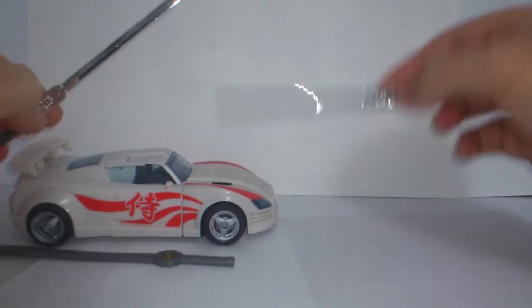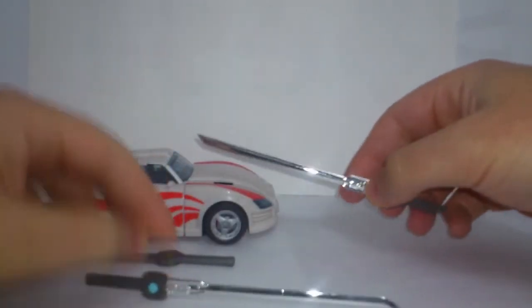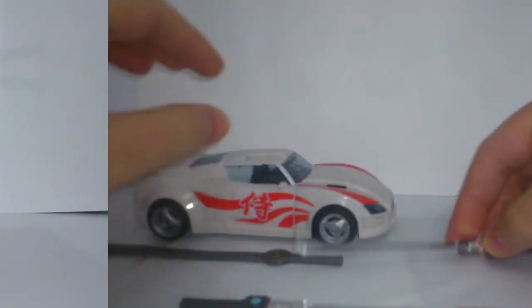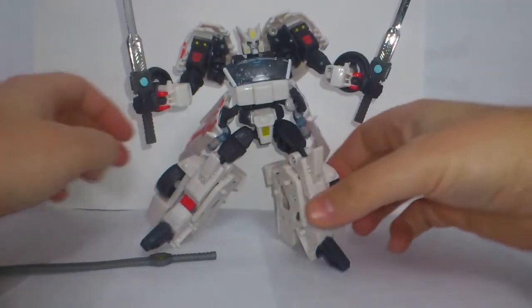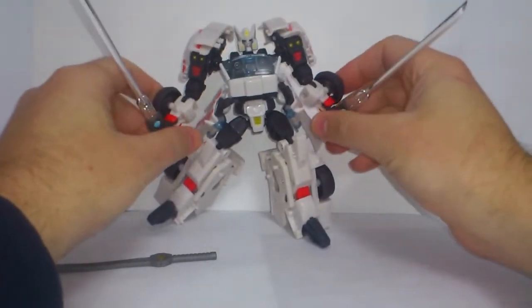I'll just quickly transform Drift and I'll show you what I mean. Now we have Drift in his robot mode dual wielding the two Ancient Sword replacements by Dr. Wu, and they look pretty awesome in his hands.